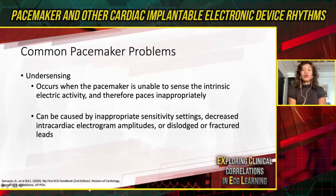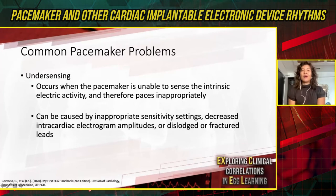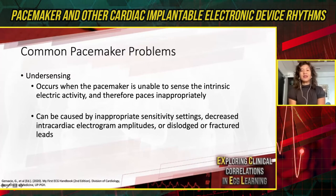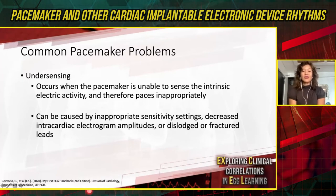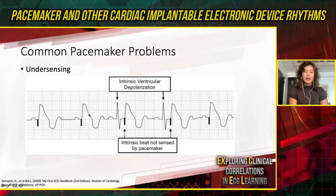The third example is under-sensing. Sensing is the ability of the pacemaker to see intrinsic electrical activity from the heart. When under-sensing occurs, the pacemaker is unable to see the intrinsic electrical activity and therefore paces inappropriately. Possible causes include inappropriate sensitivity settings, decreased intracardiac electrogram amplitudes — small P waves or R waves — or dislodged or fractured leads. In this example, the first two beats are atrial-synchronous ventricular-paced beats, and the third beat is an intrinsic beat inappropriately followed by a pacing spike.